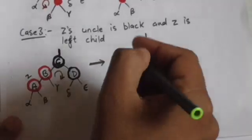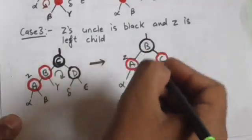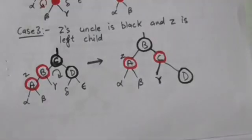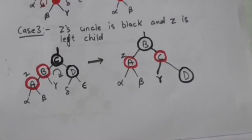Now the parent of red node Z is black. This will be more clear after the following example.